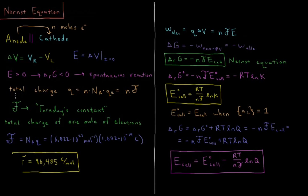In order to figure out what the Gibbs energy of our reaction is, we need to know the total charge of electrons that are going to be flowing. The total charge of the electrons is equal to the number of moles of electrons times Avogadro's number — giving us the total number of electrons — times the charge per individual electron. This equals the number of moles of electrons times a quantity we call Faraday's constant.